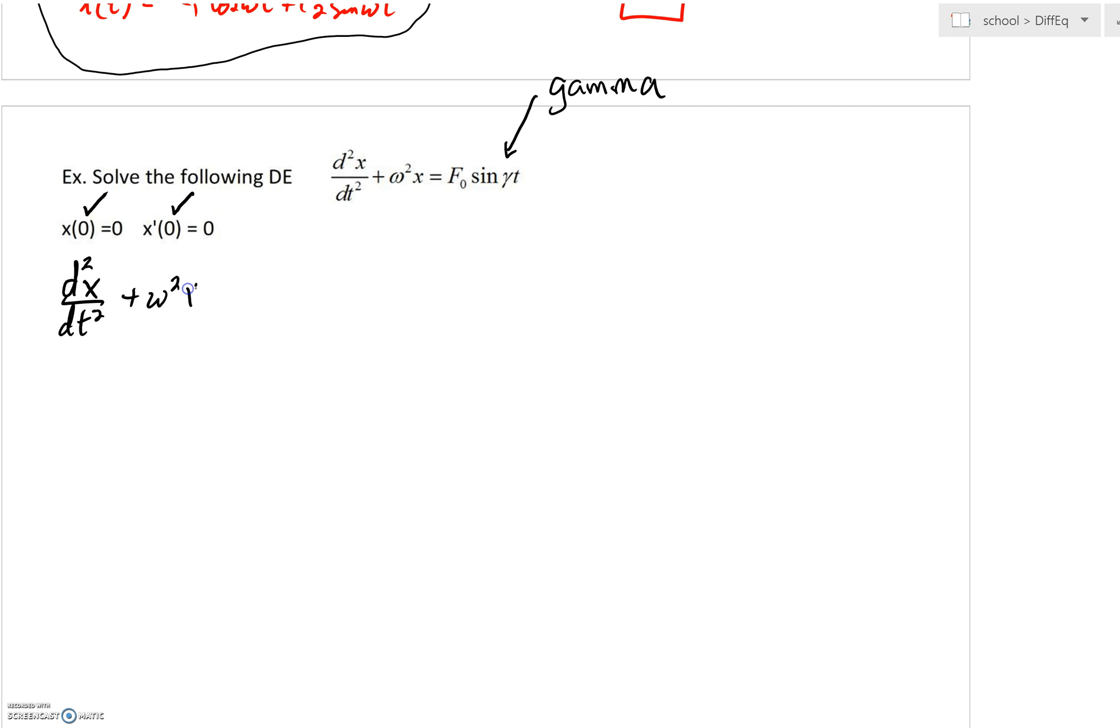As we do that, it should become obvious to us that as we solve here, we'd have m² equals the opposite of ω².